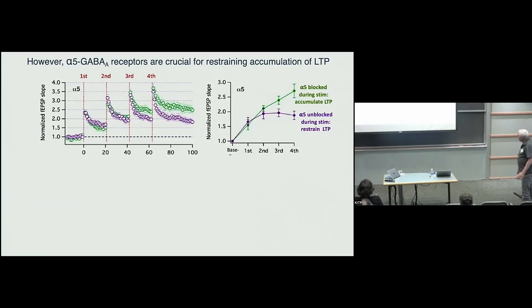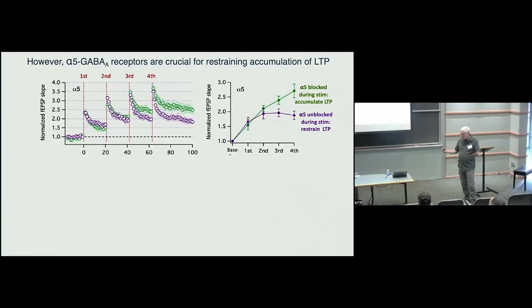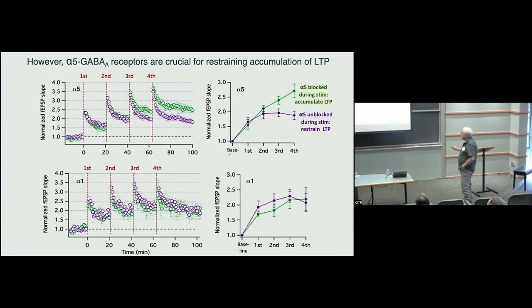But this experiment told us that that's not the case, because if you simply block alpha five during this stimulation protocol, you find that that apparent saturation goes away. And now you can keep adding more and more LTP. Eventually, of course, something will saturate. But this process, which looked like saturation of this kind of plasticity was just sort of a mirage. It's due to the fact it's something that is sensitive to the role of alpha five. And this was a big surprise. And we tried to figure out what was going on here. This is an interaction between inhibition and excitation.